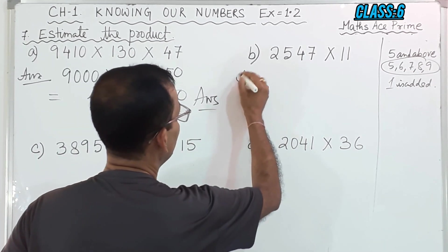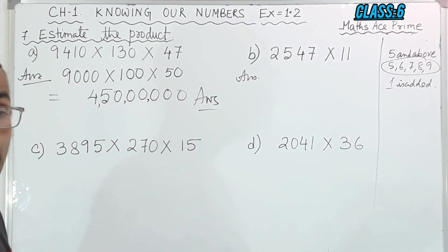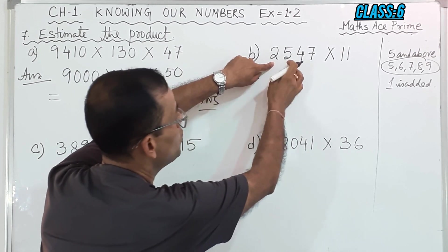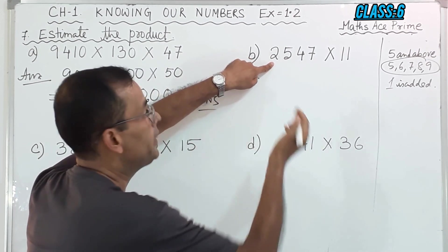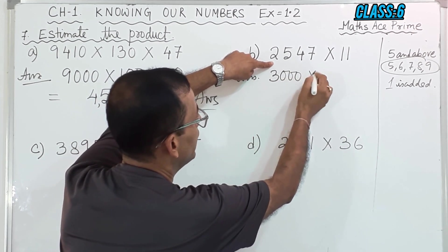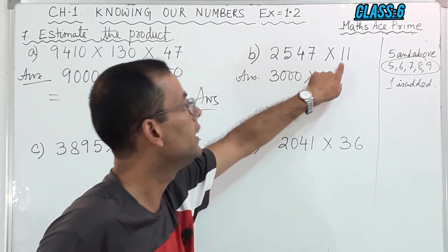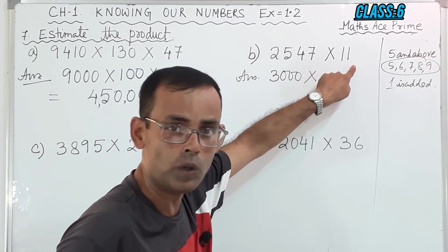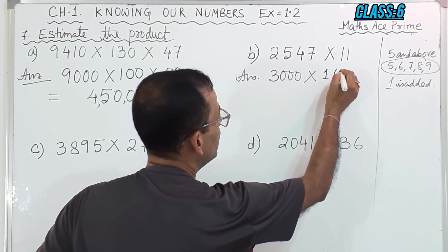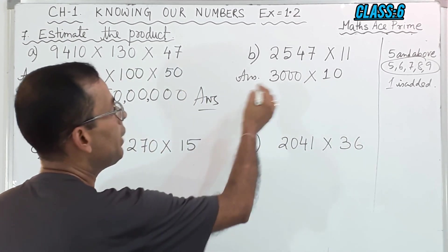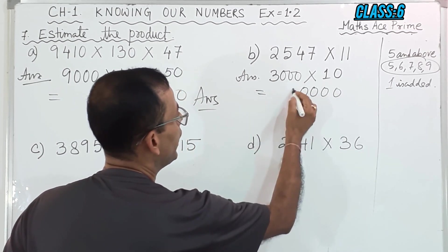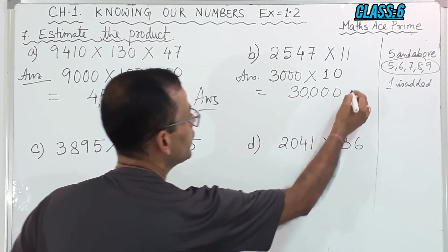Now this next one: 2,547. I will round off in the 1,000 place. After 2, what is there? 5. So since it is 5 and above, I will not write 2,000 but will write 3,000. Now here, 11 — in the 10s place we have 1, and the next digit is also 1, so there is no change. It will remain 10. Now we multiply: there are 4 zeros, and 3 into 1 is 3. So we got the answer: 30,000.